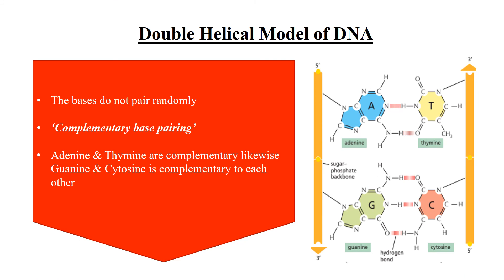Nitrogenous bases that form base pairing are very specific — they are not random. Adenine always pairs with thymine, and guanine always pairs with cytosine. These A-T and G-C associations are known as complementary base pairing.